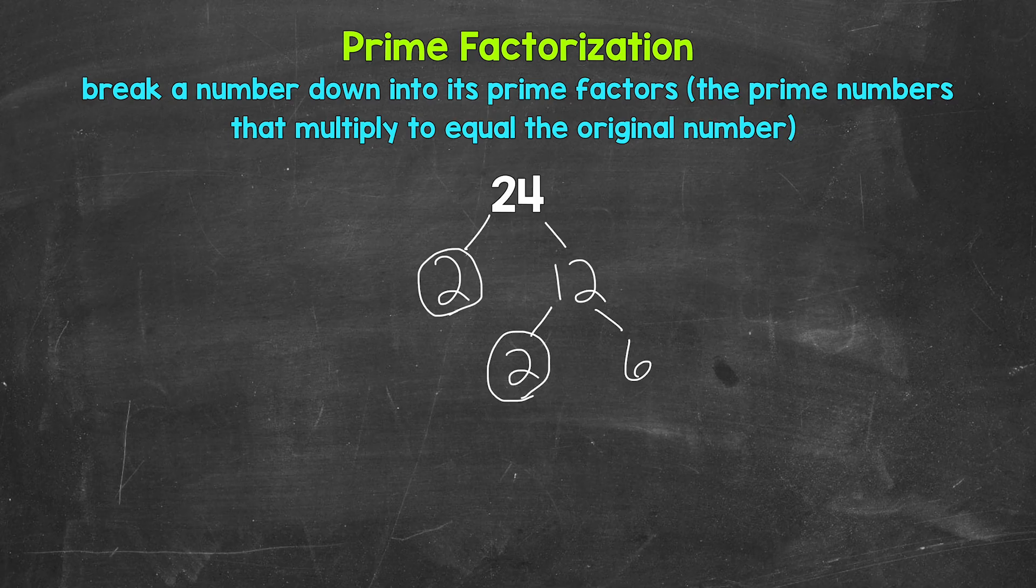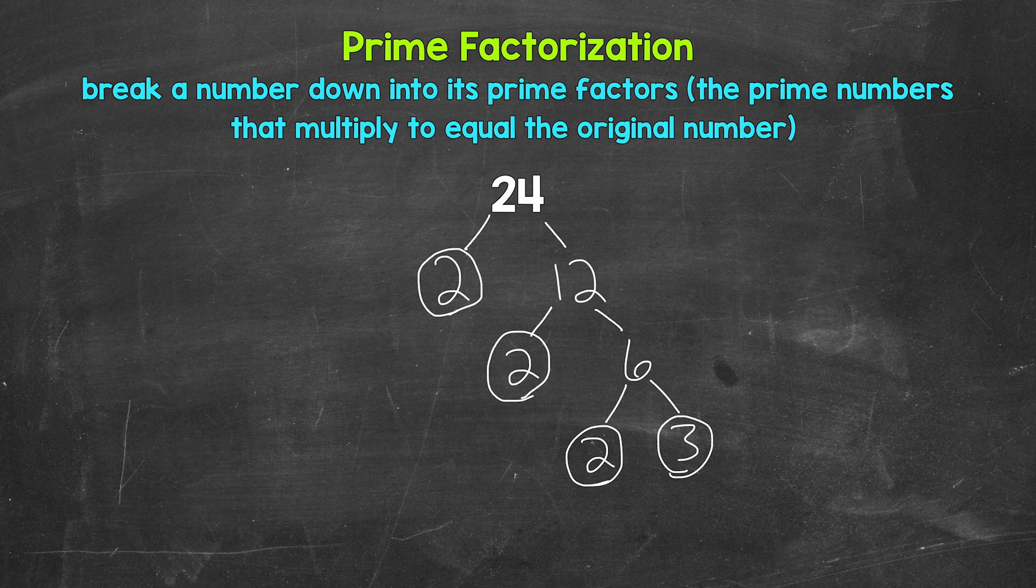Two is prime, so let's circle that. But six is a composite number, so we can continue to break that down. Two and three are factors of six. Two times three equals six. So let's break this down to two and three. Two is prime and three is prime. So we are done. This is the prime factorization of 24.